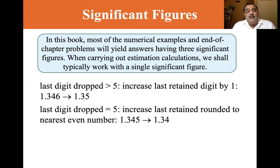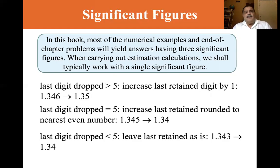I differ from the author in that regard. And that's the typical way of rounding. If the last digit dropped is less than five, then leave the last retained as is. 1.343 becomes 1.34. Again, when you're doing calculations, try to leave many significant digits in your calculator so that you can minimize rounding errors. And that's the end of this chapter one. Oops. There we go. There's the...